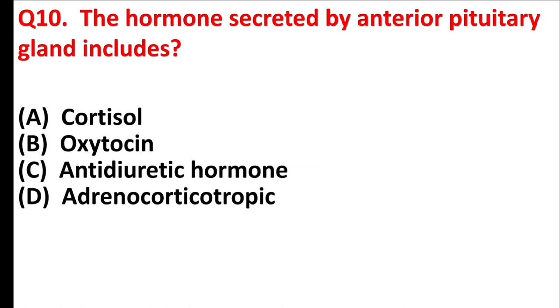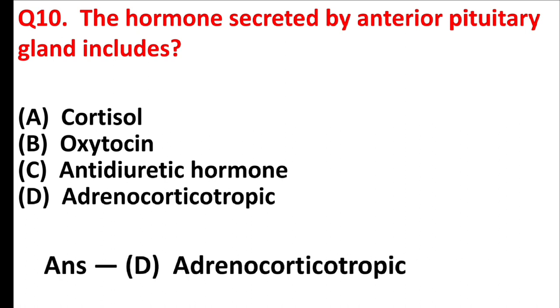The hormone secreted by the anterior pituitary gland includes — Answer is Option D, Adrenocorticotropic hormone.